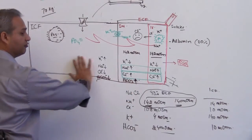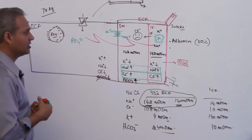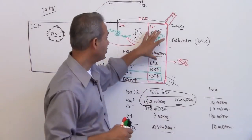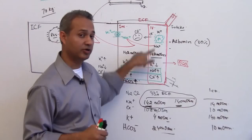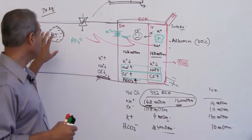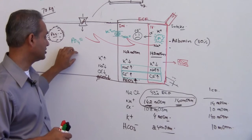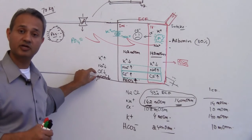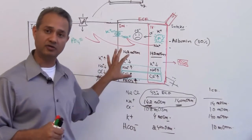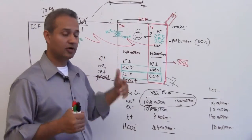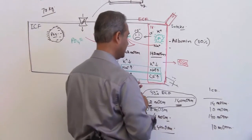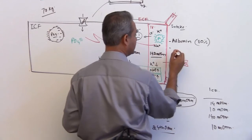Now we have established various compositions. There are other things in the vascular compartment — the majority of non-charged components. Everything discussed so far has been ionic: proteins, phosphates, magnesium, potassium, chloride, and bicarbonate are all charged electrolytes. If you talk about non-electrolytes — things which are not charged — they make up the majority of substances on the non-ionic side.